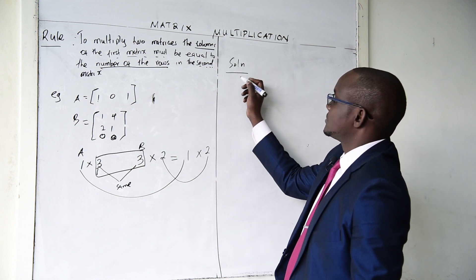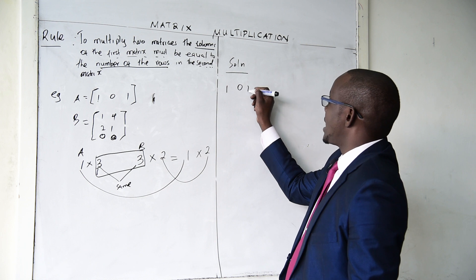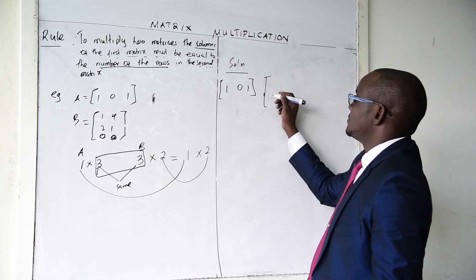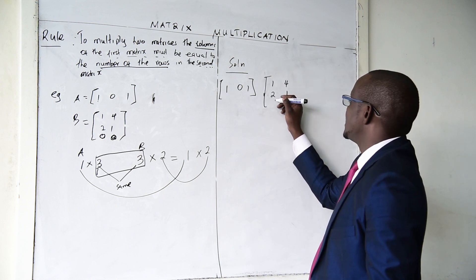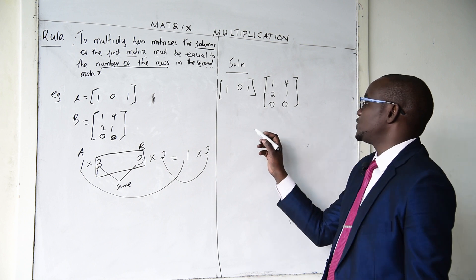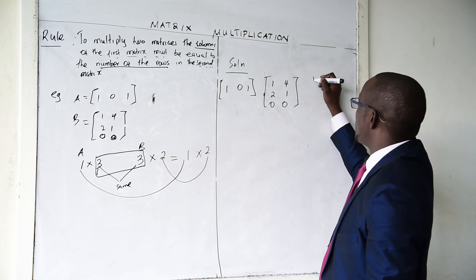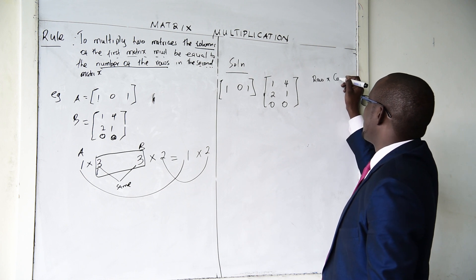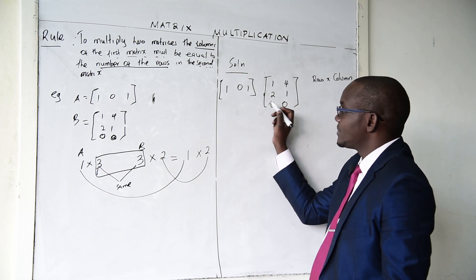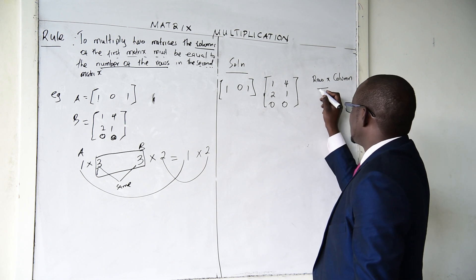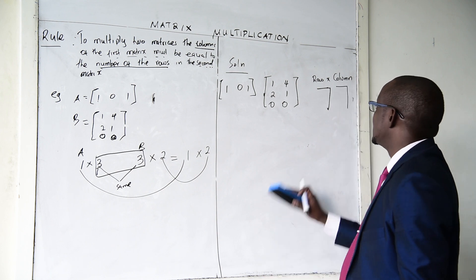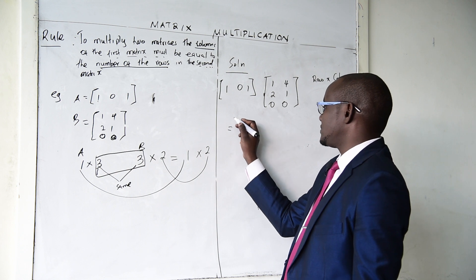So our matrix A is [1, 0, 1] and we multiply it by matrix B, [[1, 2], [0, 4], [1, 0]]. When doing matrix multiplication, you multiply a row by a column. So I take this row and multiply with each column of matrix B.